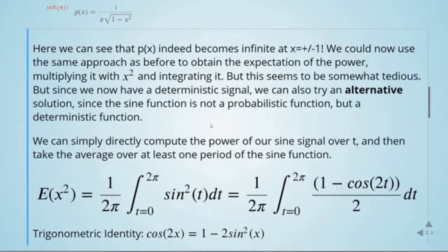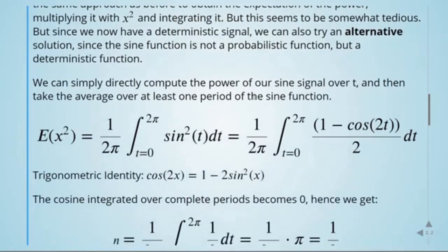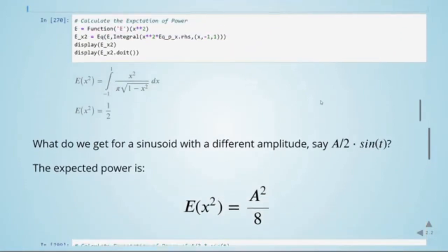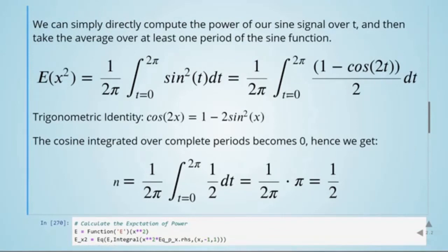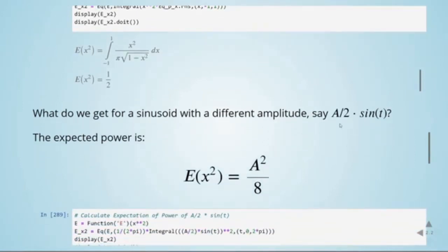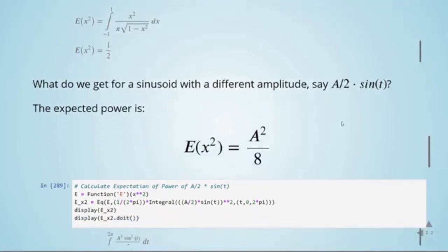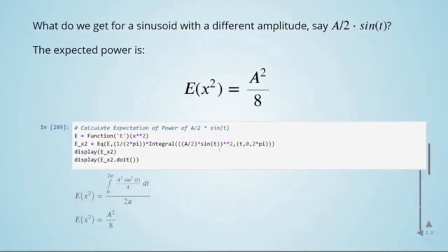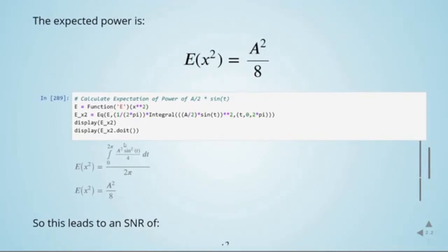We calculated the expectation of signal power for a sine wave in two ways: using the PDF, and directly integrating the deterministic function — both give 1/2. When the amplitude is a/2, going from minus a/2 to plus a/2, the expected power becomes a² divided by 8. In SymPy, we replace the argument with (a/2)·sin(t) and compute the integral, confirming the result a²/8.